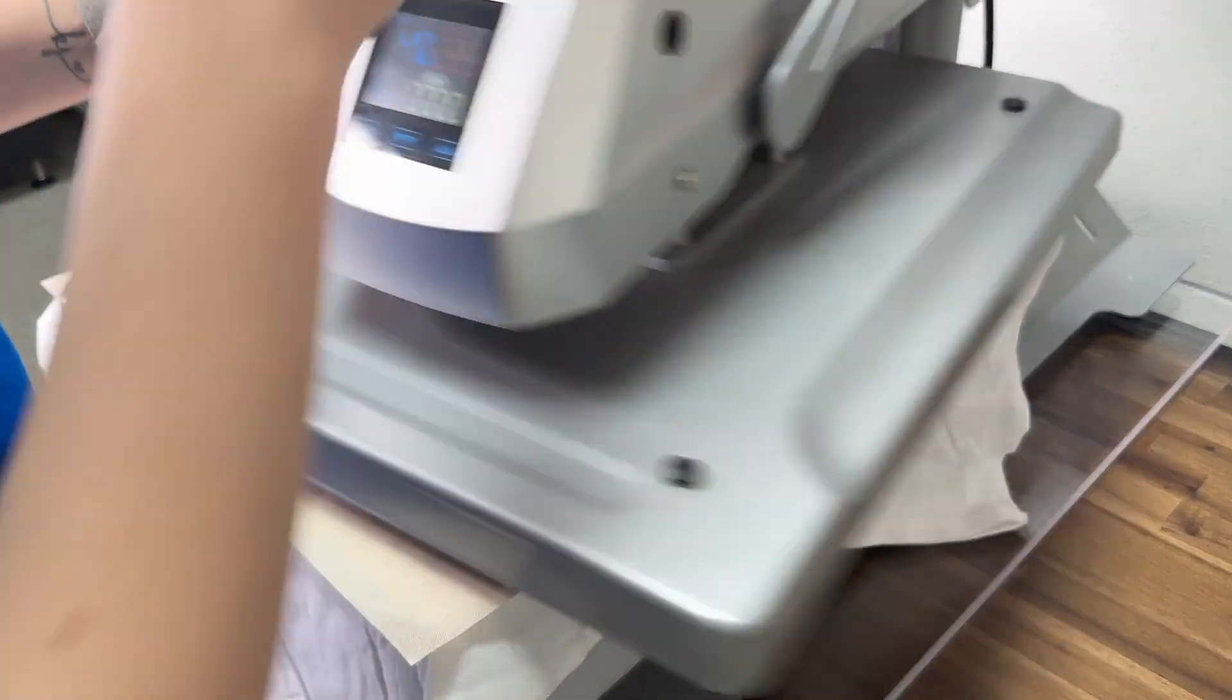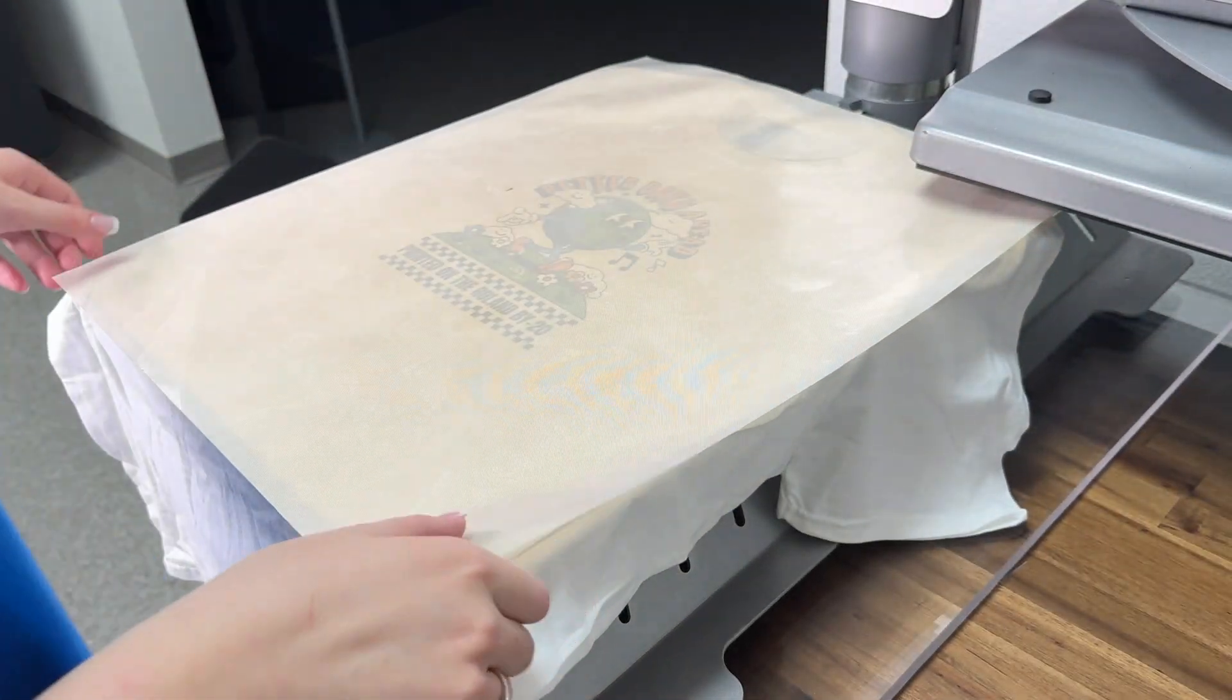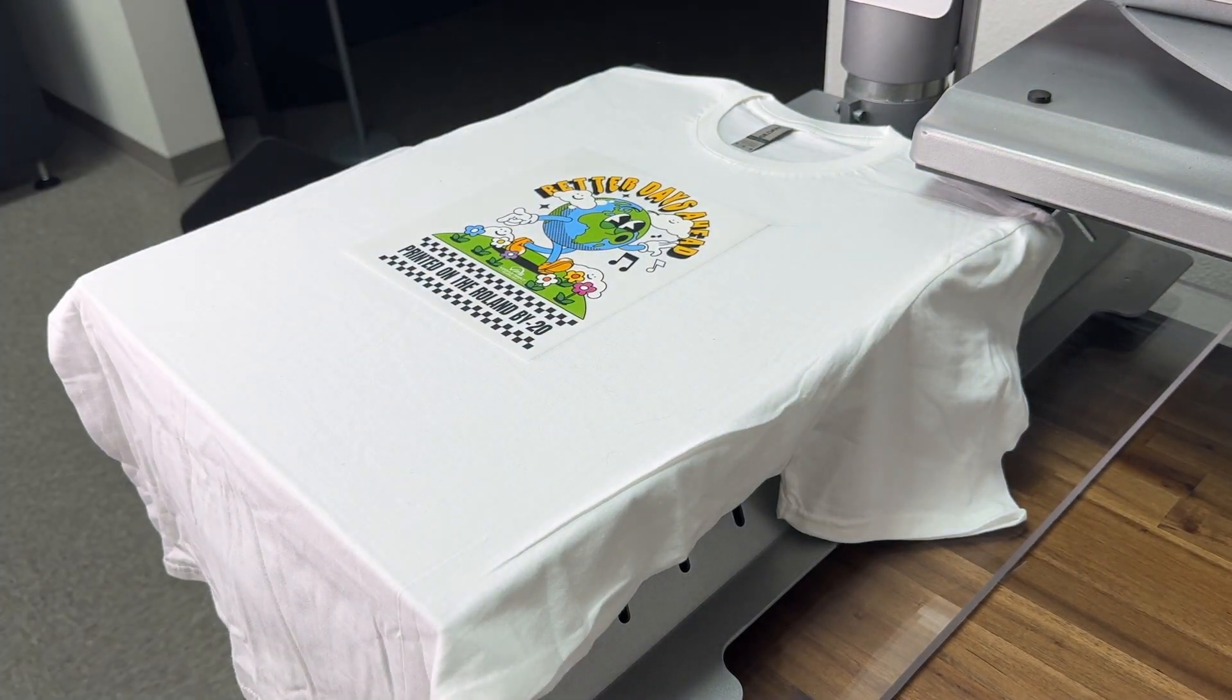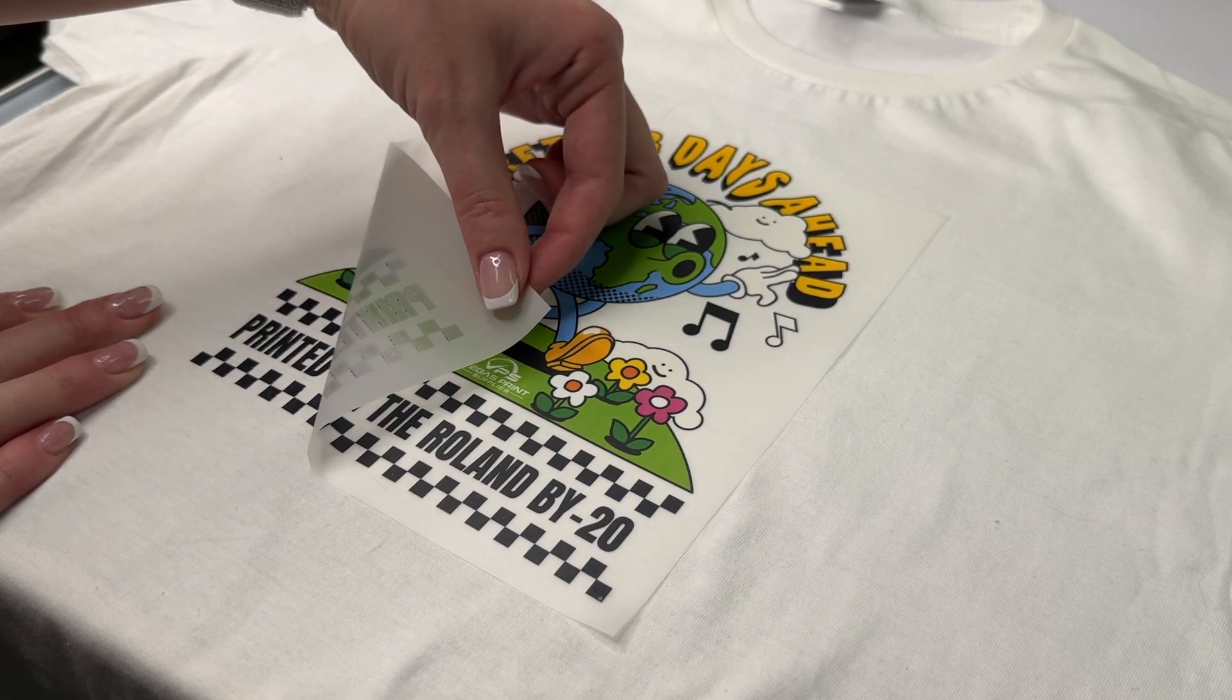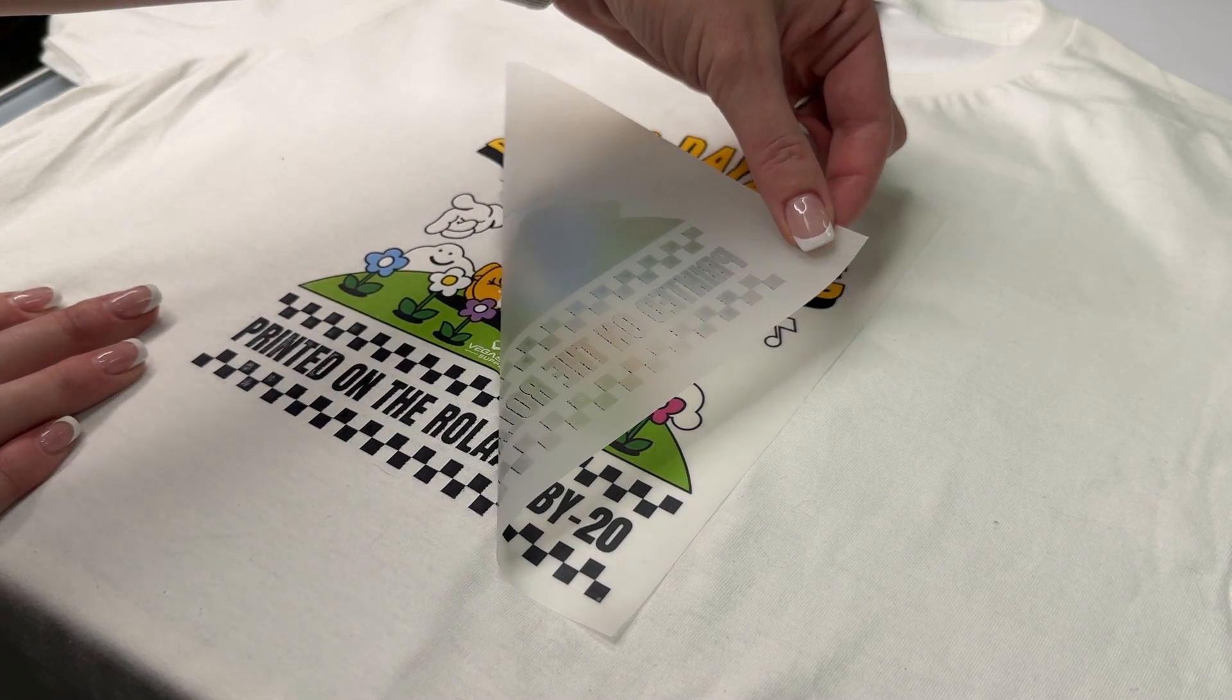After I'm done pressing the transfer onto the t-shirt, since the Roland film is a cool peel, I'm going to have to wait for the shirt to cool down before I can peel it off. Now that the shirt's cooled down, I can peel off the transfer and just like that it comes off like butter.